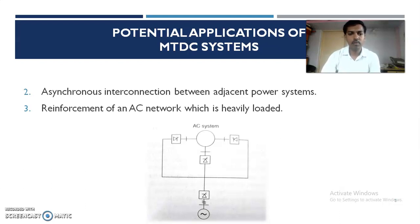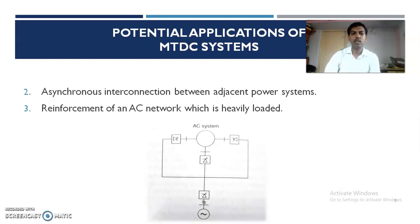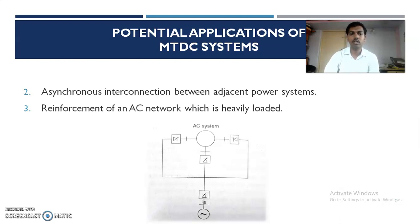The third application is reinforcement of a heavily loaded AC network. Consider an urban power system network — urban power systems are always heavily loaded. To reinforce that AC network, we can arrange an MTDC system with one rectifier and several inverters, providing multiple power injections to the AC system without overloading the AC networks.